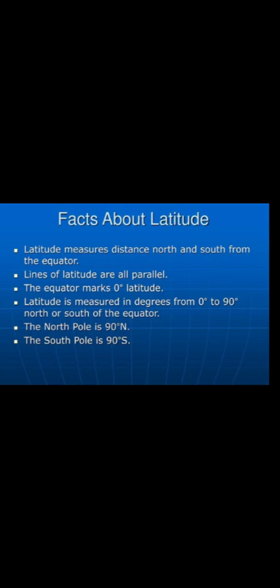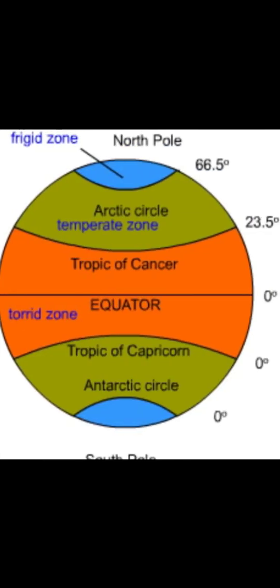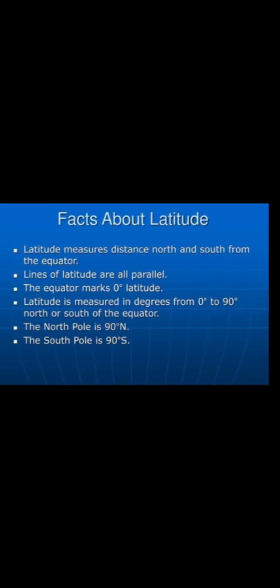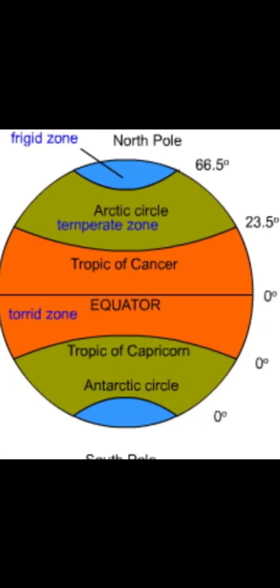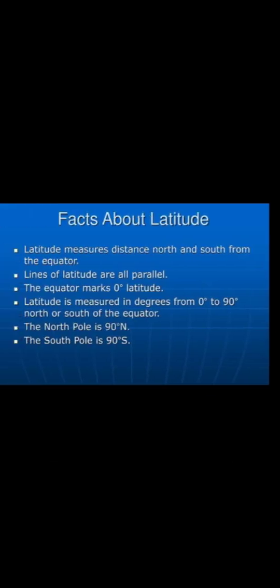Latitude is actually the imaginary line which humans have made to easily identify climate zones. For example, the equator is very hot, the Tropic of Cancer is a temperature zone, and then there is the Arctic Circle. Because of latitude, we find these climate zones, we find locations, and we identify climate regions.